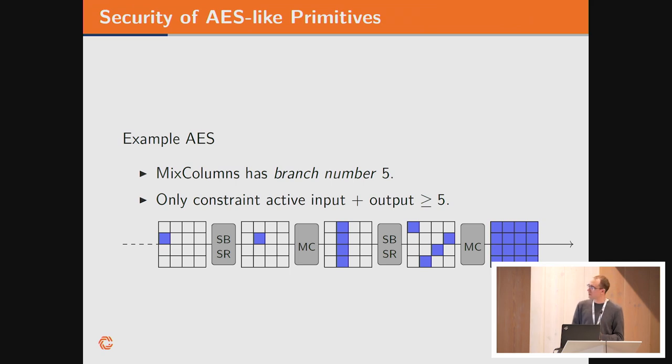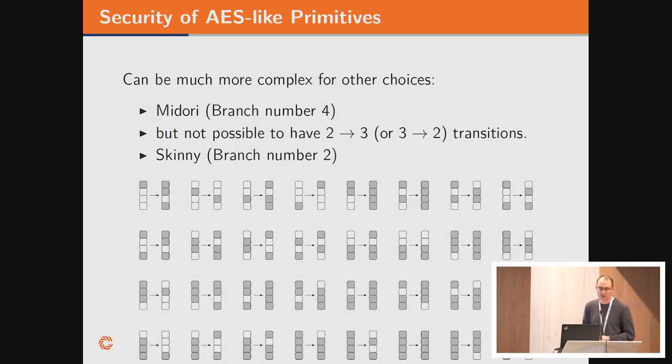This allows quite nice arguments on the minimal number of active S-boxes you get over more rounds. However, for other choices of mixed columns and shift rows, it becomes a bit less clear. There are a lot of other designs following this strategy. For instance, Midori uses a branch number four. But actually, there are transitions in there which are not possible. In the case of Midori, you can never go from two to three active through mixed columns. The picture below shows what happens through the skinny mixed columns, which is extremely lightweight with only a branch number of two. But not all transitions are possible. If you look at this, you will see there are only two transitions which go from one to one and reach this minimal bound. So if you want to analyze the cipher for more rounds, it becomes quite complex.